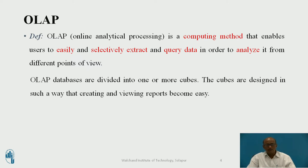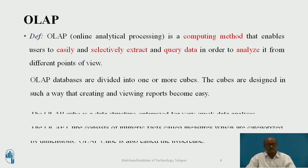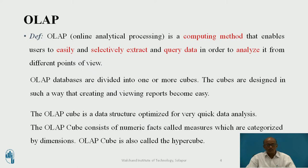OLAP databases are divided into one or more cubes. The cubes are designed in such a way that creating and viewing reports become easy. The OLAP cube is a data structure optimized for very quick data analysis. It consists of numeric facts called measures, which are categorized by dimensions. The OLAP cube is also called the hypercube.